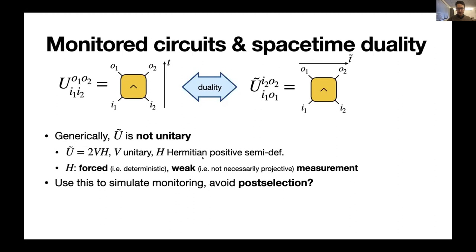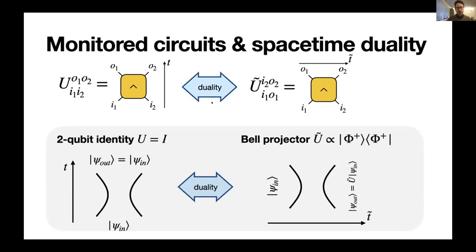But nonetheless, the idea is, can we use this type of non-unitarity that comes out of this in order to simulate measurements and obtain these measurement induced phases without post-selection. And to give an example of what we can get here, if we take the simplest two qubit gate, which is just the identity, diagrammatically we have an input state onto two qubits that evolves trivially. So each qubit moves forward in time. It doesn't interact with the other, and it comes out at the end completely unchanged. So these legs here simply represent Kronecker deltas on the input and output states.